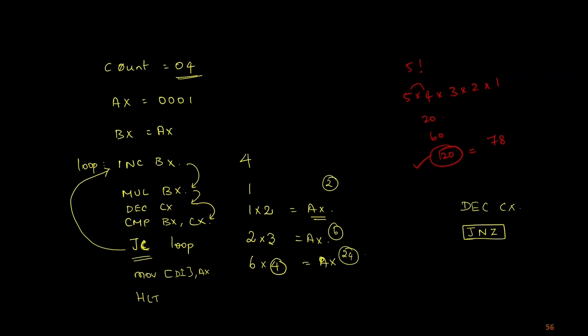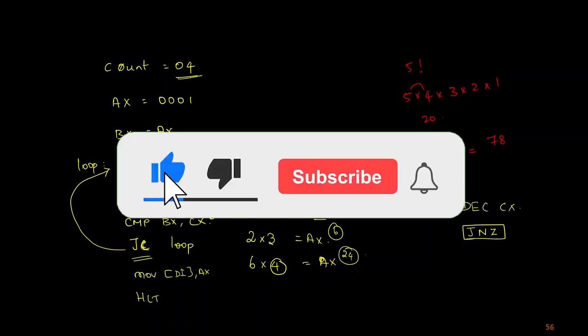Like this, I can find the factorial of any number and get the hexadecimal equivalent as output. If you want to convert it to decimal, you have to apply the hexadecimal-to-decimal conversion logic in the same program. Thank you for your patience in listening.